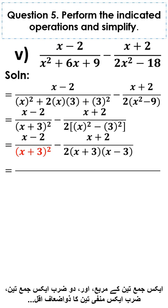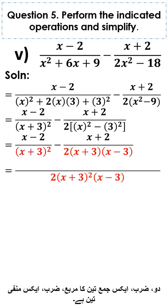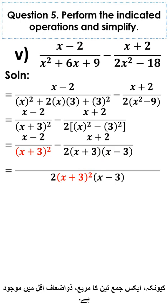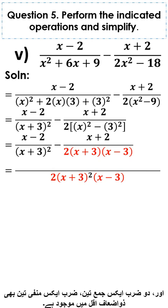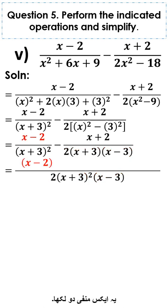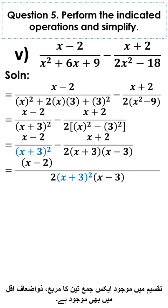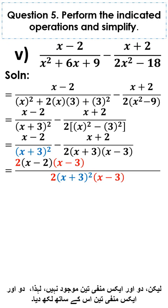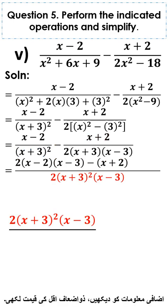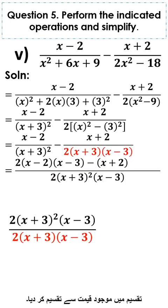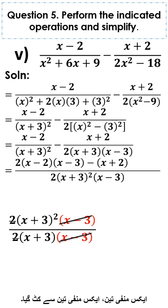The LCM of x plus 3 whole square and 2 into x plus 3 into x minus 3 is 2 into x plus 3 whole square into x minus 3. For the first fraction, x plus 3 whole square is in LCM, but 2 and x minus 3 are not, so 2 and x minus 3 are written with it. For the second fraction, 2 cancels with 2, x minus 3 cancels with x minus 3, x plus 3 cancels with one factor of x plus 3 whole square, leaving x plus 3.